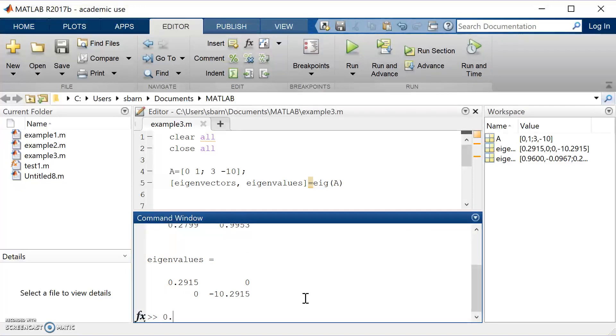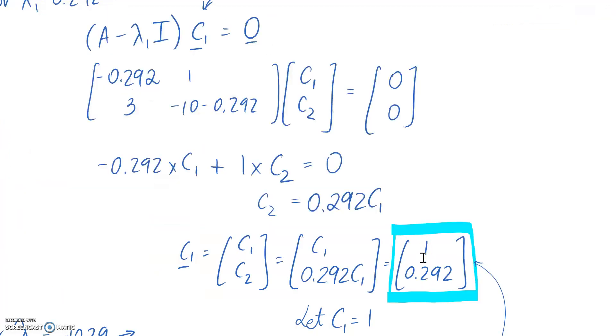So if I scroll this down, so 0.2799 divided by 0.96, we end up with 0.292, and that's what I said the ratio should be here. So that means that MATLAB has calculated a same solution or same ratio as what we have got.